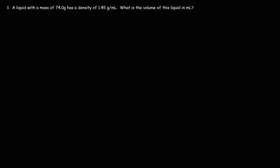Let's work on this example problem. A liquid with a mass of 74 grams has a density of 1.5 grams per milliliter. What is the volume of this liquid in milliliters? So what you could do is start with the mass in grams.